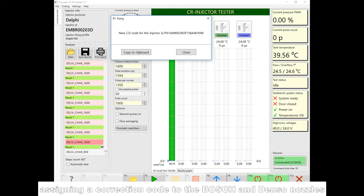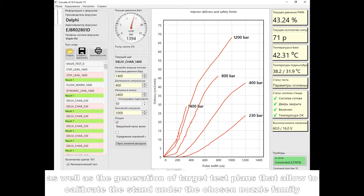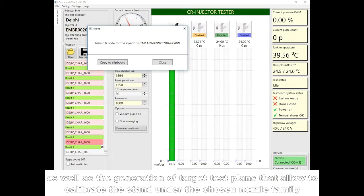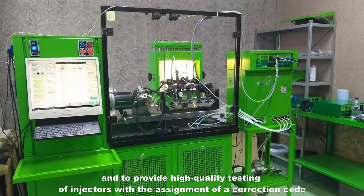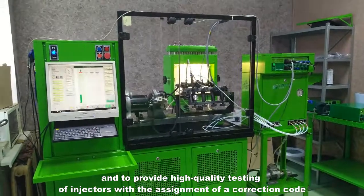Assigning a correction code to the Bosch and Denso nozzles, as well as the generation of target test plans that allow the calibration of the stand under the chosen nozzle family and to provide high-quality testing of injectors with the assignment of a correction code.